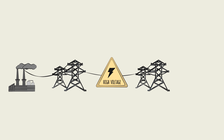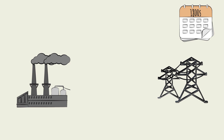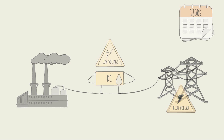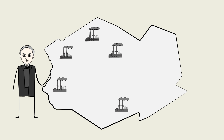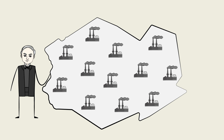However, electricity is generated and consumed at low voltages. This was the kicker for Edison. In the 19th century, there was no way to increase DC voltage before transmission. And since low-voltage current can't travel far without major losses, Edison's DC required a power plant every mile or so — a very expensive system, especially in rural areas.